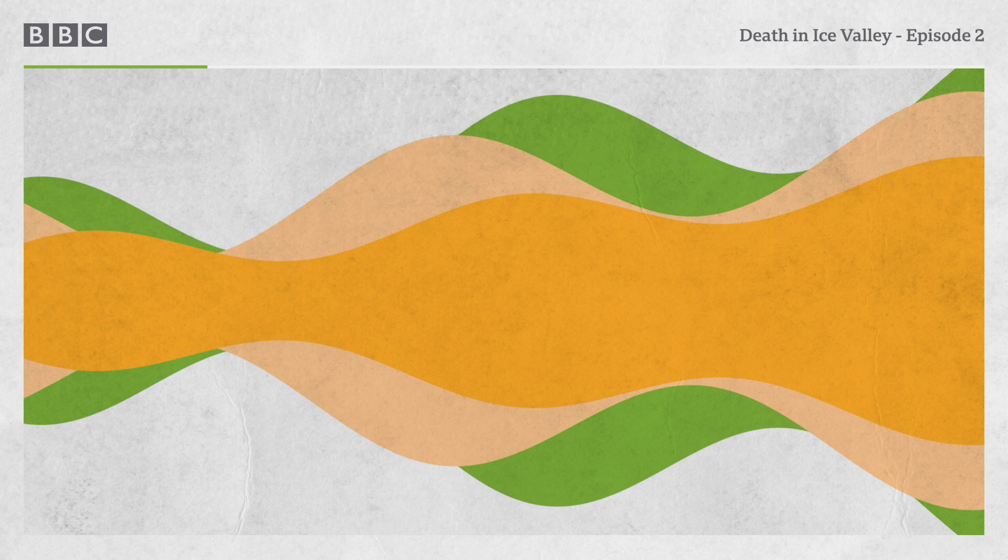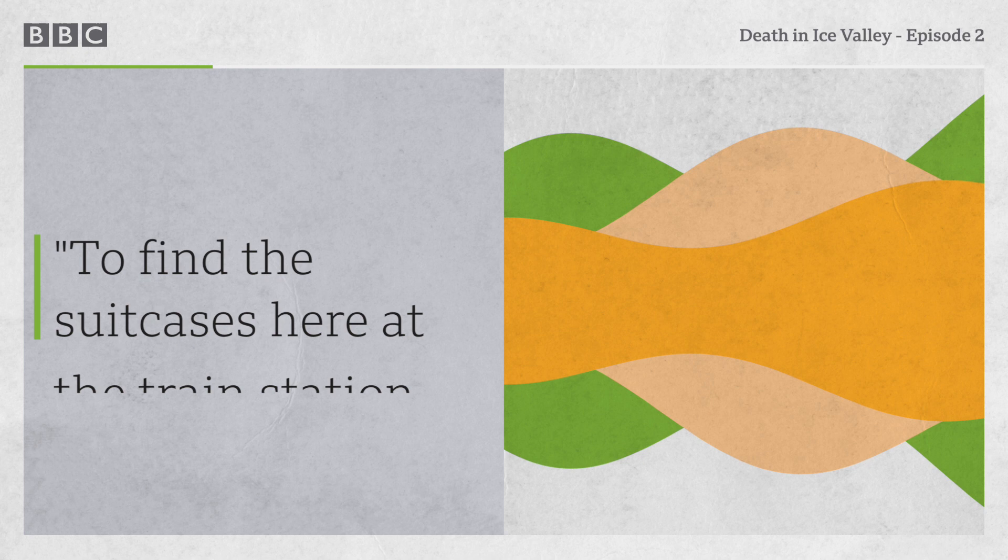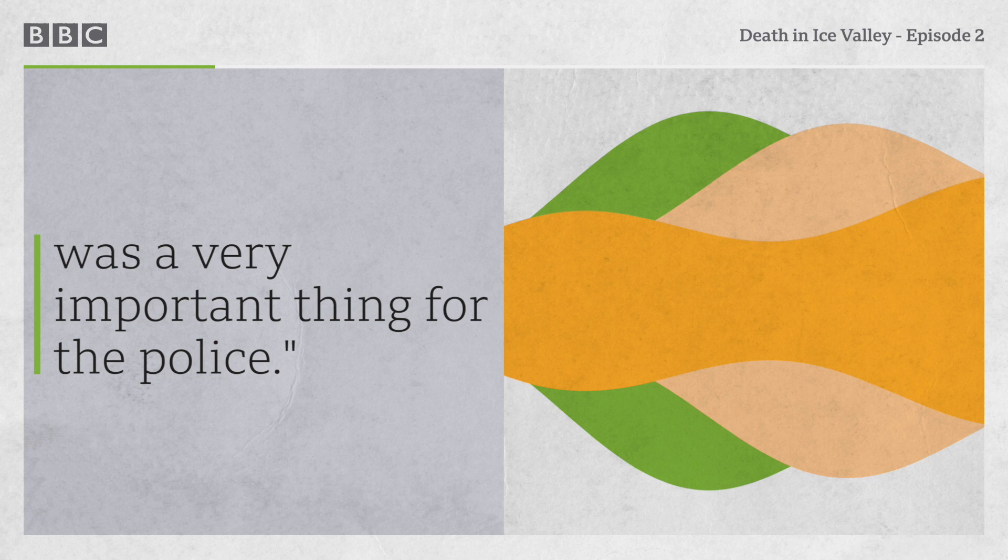Another very interesting and important finding was a plastic bag with the name of a shoe store in Stavanger, which led them to Stavanger because they understood this woman must have been in Stavanger. Anyway, to find the suitcases here at the train station was a very important thing for the police.